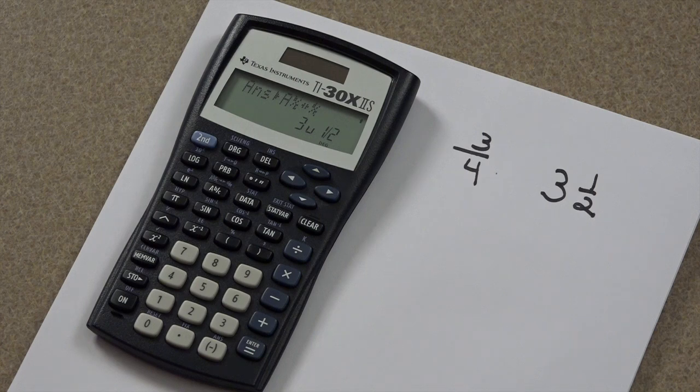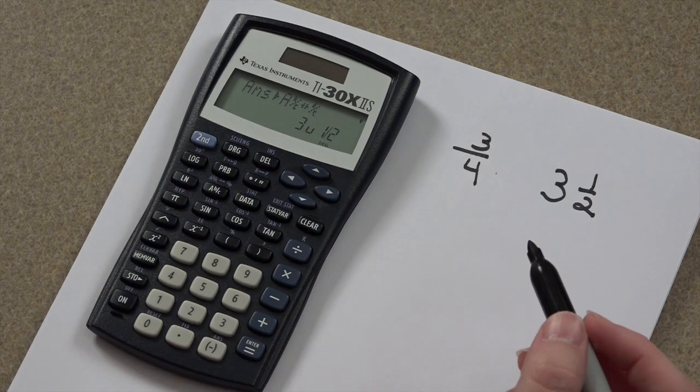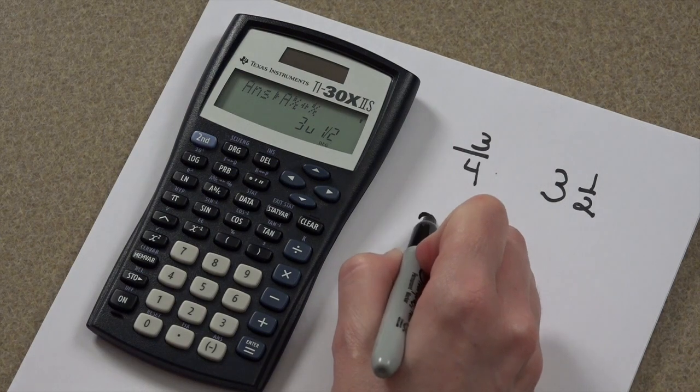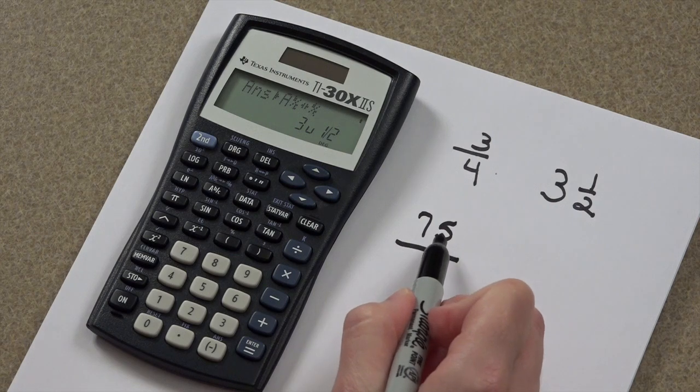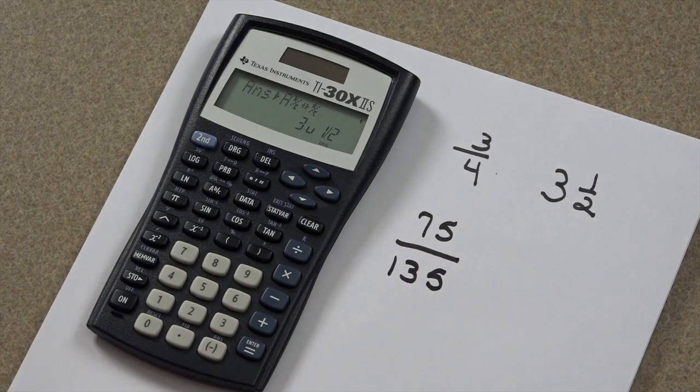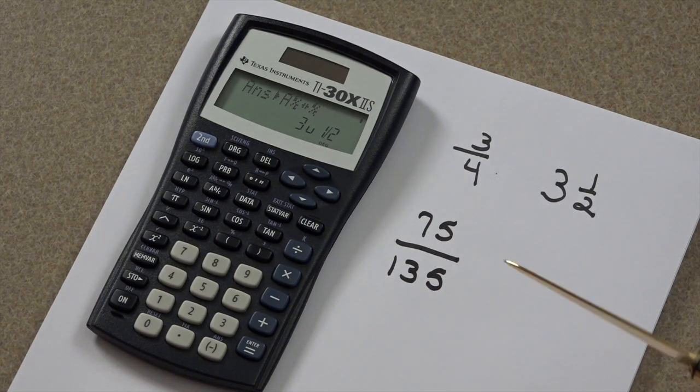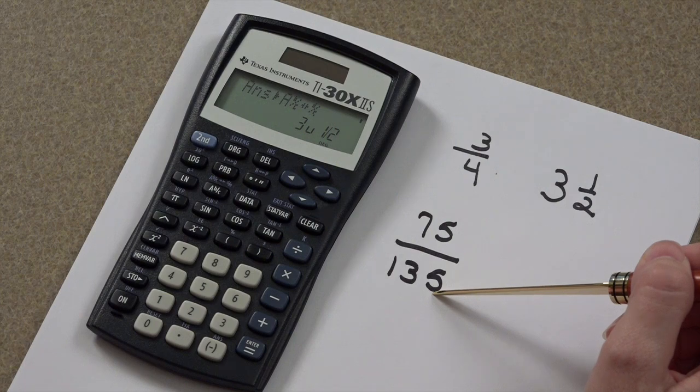Now that's not all your calculator does. Your calculator also reduces. How cool is this? Let's say you've got an answer of 75 over 135. I don't know about you, but those numbers look kind of big. Wouldn't it be great if your calculator could reduce this automatically? It does.